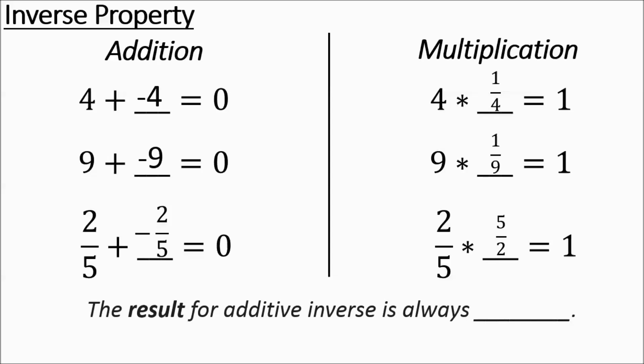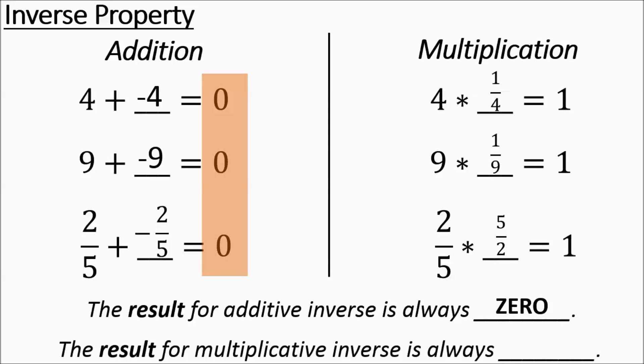Notice how for the additive inverse, all the adding results end up with 0 — it's not involved with the operation, but it's the result. Same thing for multiplying: the result for multiplicative inverse is always 1. So you end up with 0 and 1.